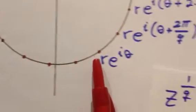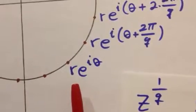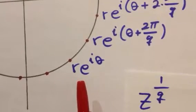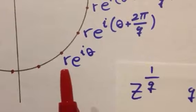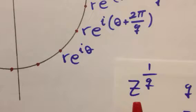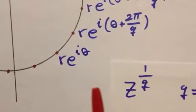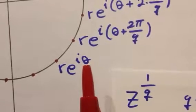For example, if r times e to the i theta is one of the roots, then r has to be the Qth root of the absolute value of z, and if we multiply theta by Q, then we get the argument of z.